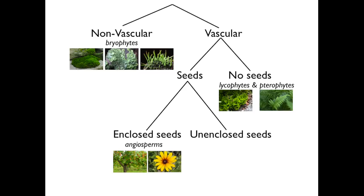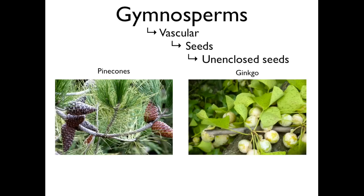Plants with vascular tissue and unenclosed seeds are known as gymnosperms. As a general rule, trees with pine cones are gymnosperms, but ginkgo trees are also gymnosperms.